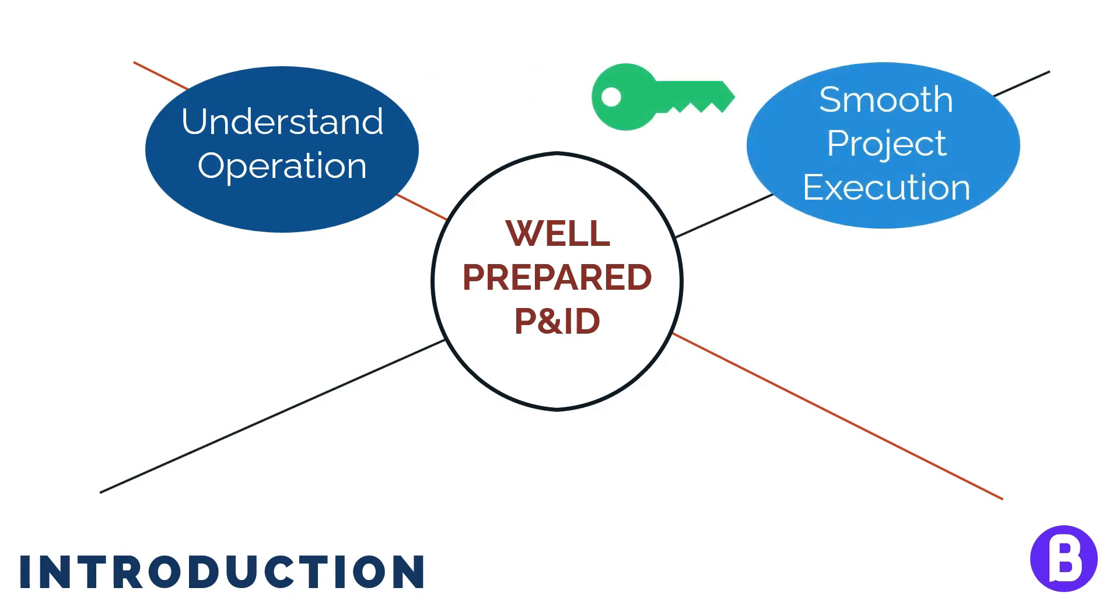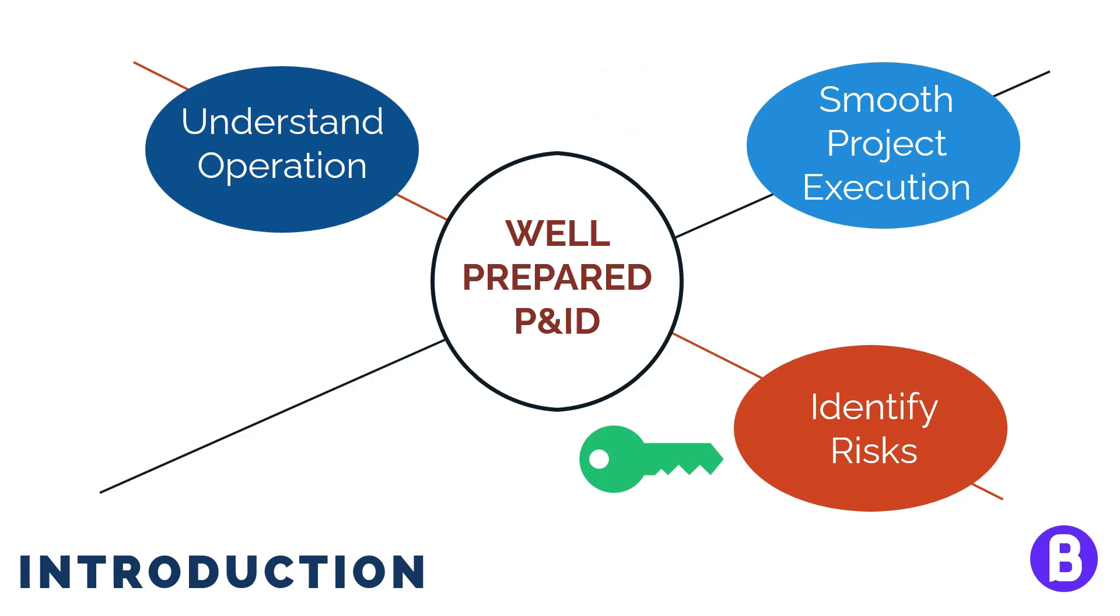In addition, it shall identify main risks. This would reduce the probability of issues when running the plant. If we want to know the process parameters that shall be monitored, we can simply open the P&IDs.